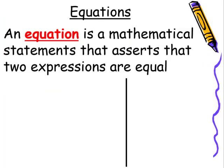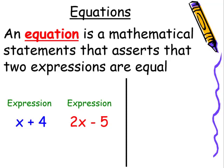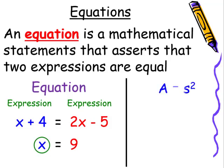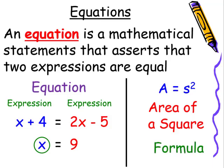An equation is a mathematical statement that asserts that two expressions are equal. We have the expression x plus 4, we also have the expression 2x minus 5. All we need is the equal sign which makes them an equation. An expression equal to another expression is an equation. Our goal is to isolate that variable x and have it set equal to a constant. In this particular equation, a equals s squared. This is how we find the area of a square. These types of equations have a special name called formulas.